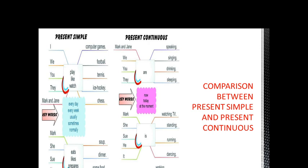So these are about present simple. In present continuous, some keywords are now, today, or at the moment. In simple present tense, the keywords are every day, every week, usually, sometimes, normally, daily. And in present continuous, the keywords are now, today, or at the moment.